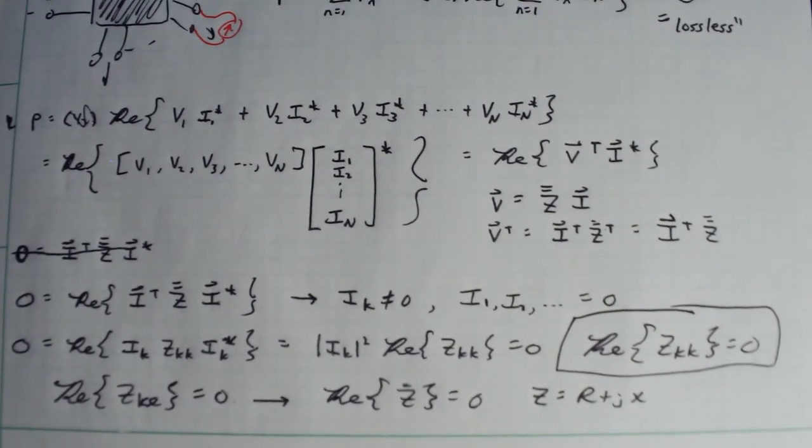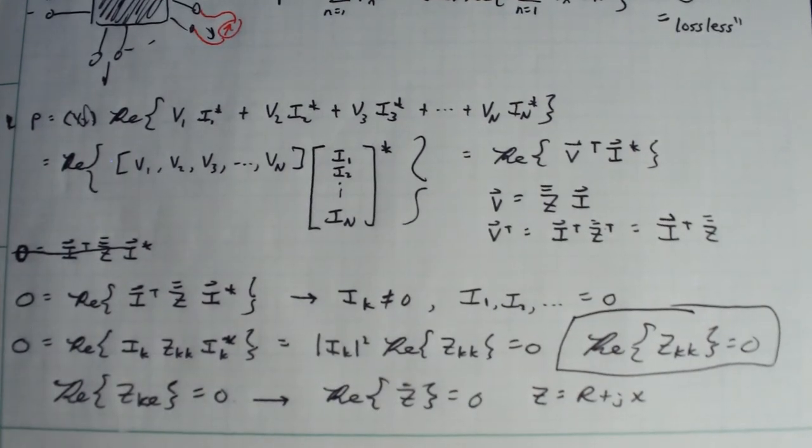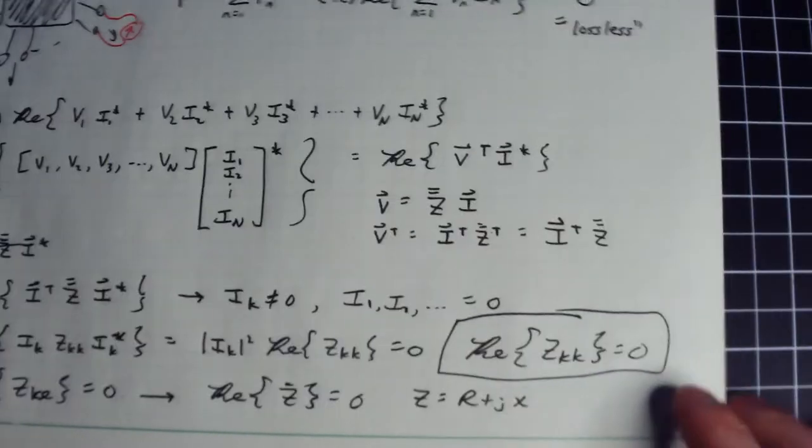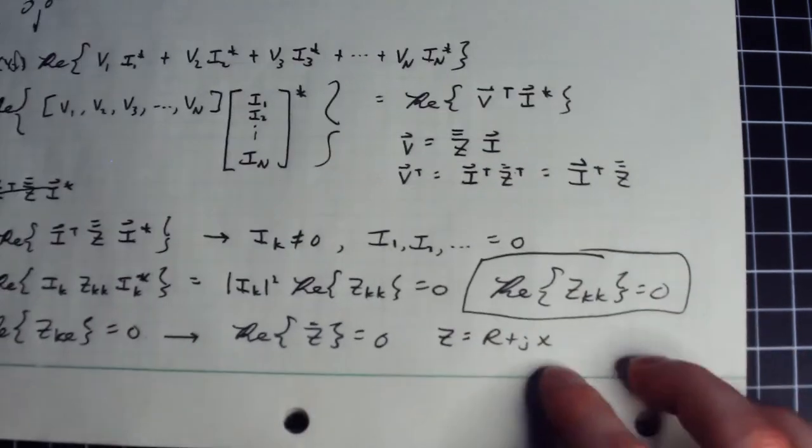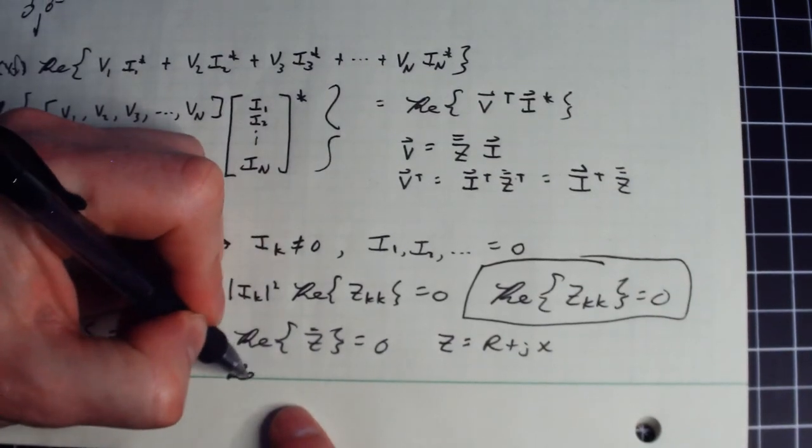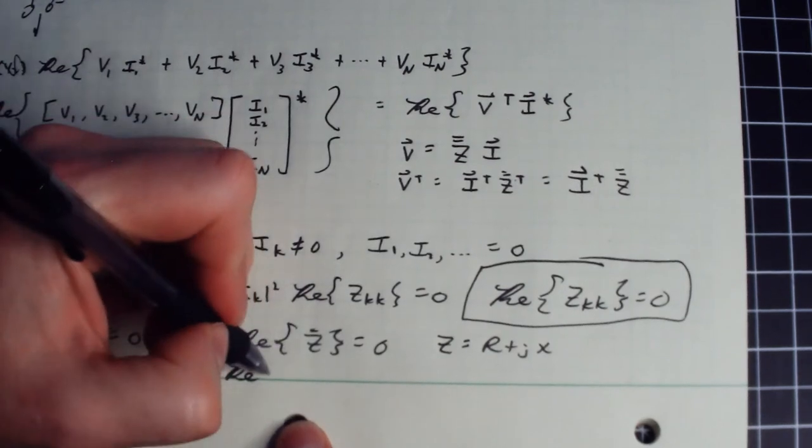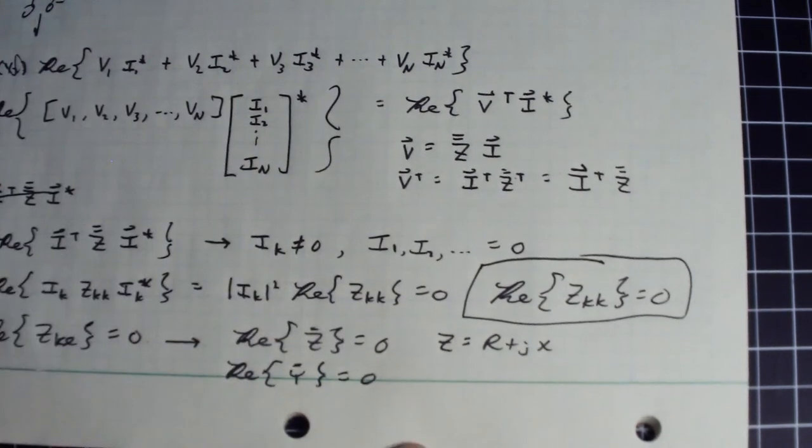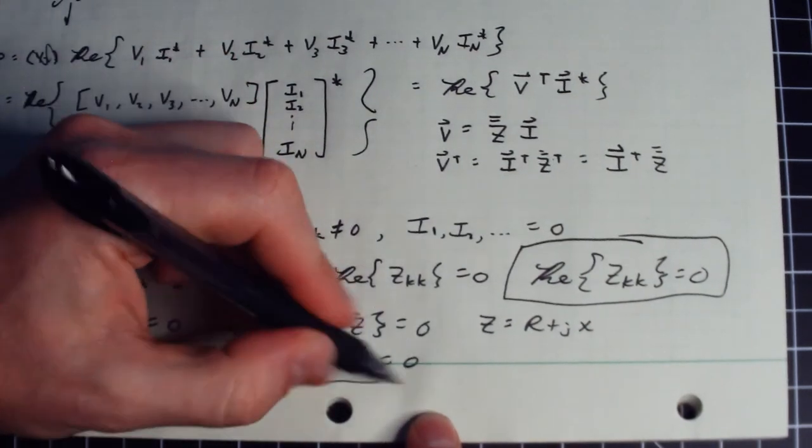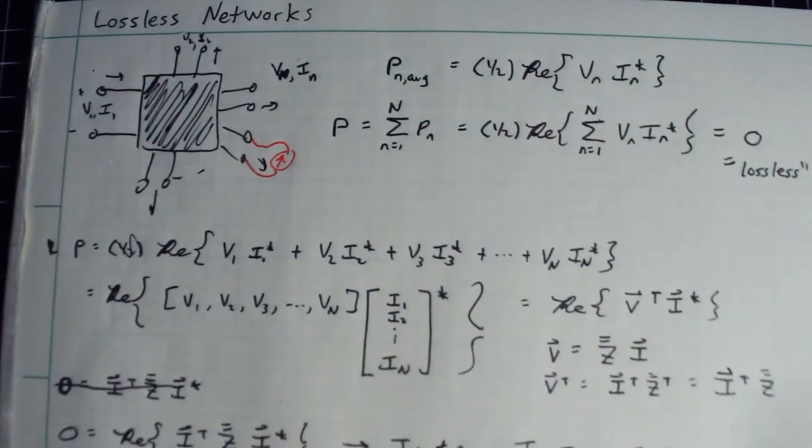That's a fundamental property of a lossless reciprocal network: all of these elements inside this matrix have to be purely imaginary. And that feels like a lot of work to prove something relatively trivial, but it's one of those little properties that's nice to prove because it's going to prove helpful down the road. So then of course, the same thing will apply if we do a similar argument on the admittance matrix. You will also find that the inverse of that is going to also require no real values as well. So if these conditions are satisfied on a reciprocal network, you will have a lossless network.